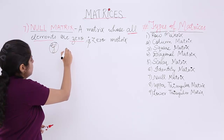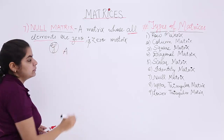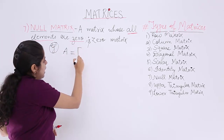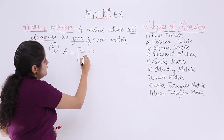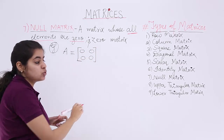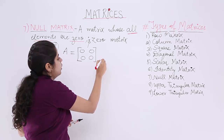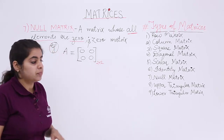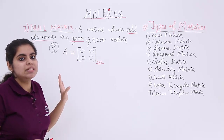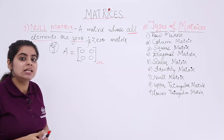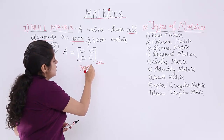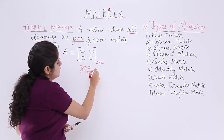Suppose I have a matrix A which is a 2 by 2 matrix with all the entries as zero. This is a square matrix with all the elements as null or zero, hence it is a null matrix or a zero matrix. Yes, it is an example of a zero matrix.